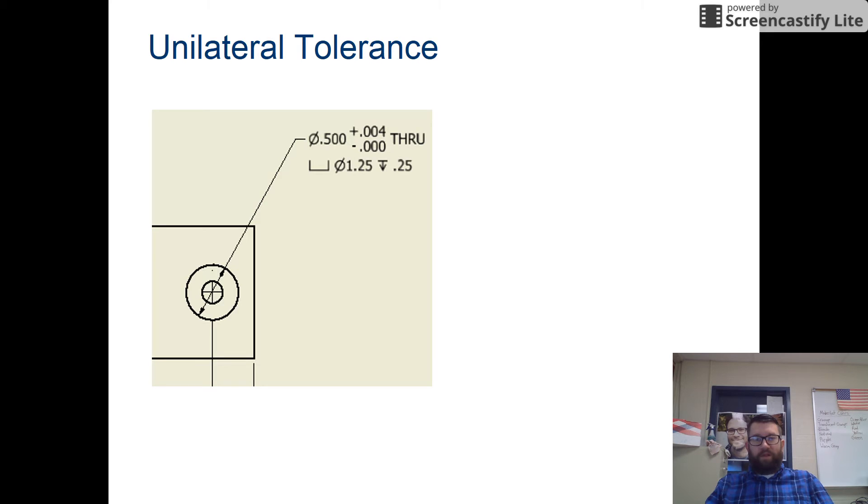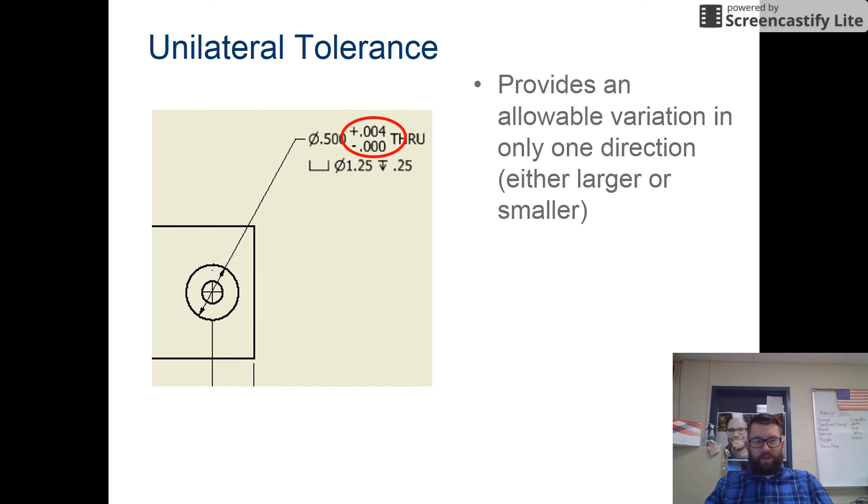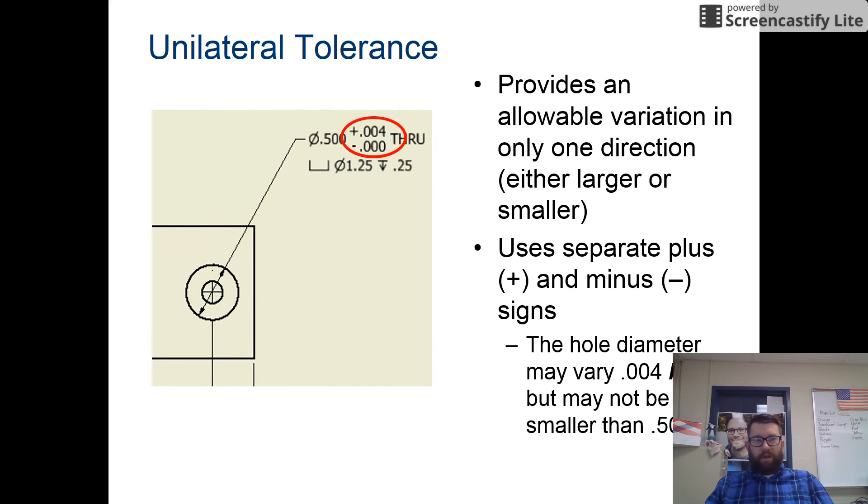Unilateral tolerance is usually used for a part that needs to fit exactly correct. For this example, you can have an upper limit of 0.004, but you cannot have any smaller limit than 0.5, because otherwise that part will not fit with another part in the overall product. They use separate plus and minus signs. Hole diameter may vary by 0.004 larger, but cannot be smaller than a half of an inch.